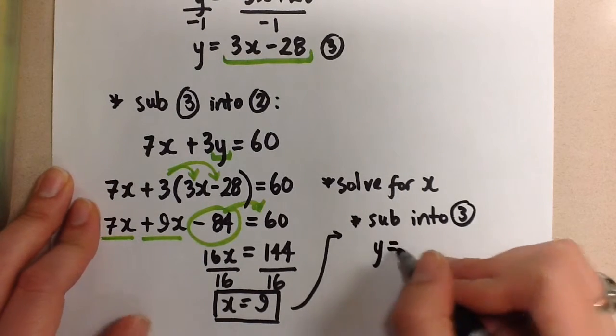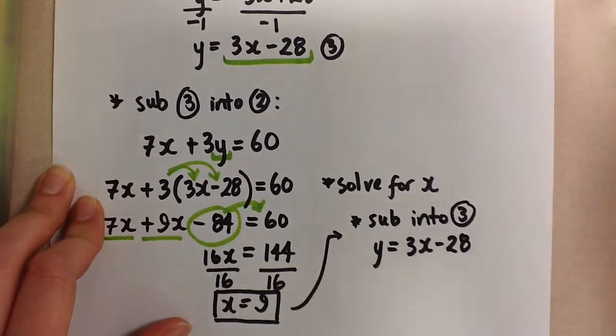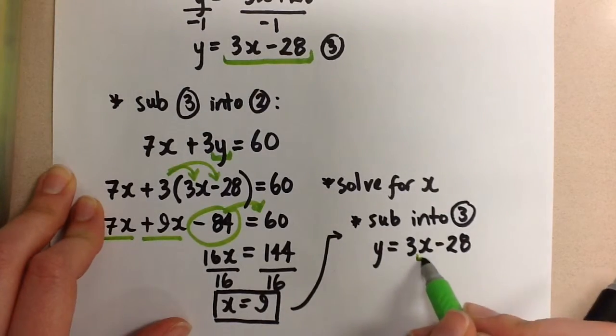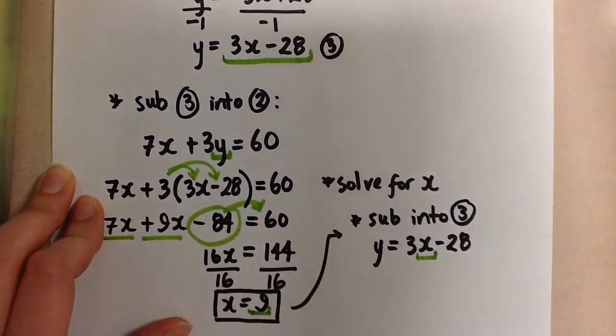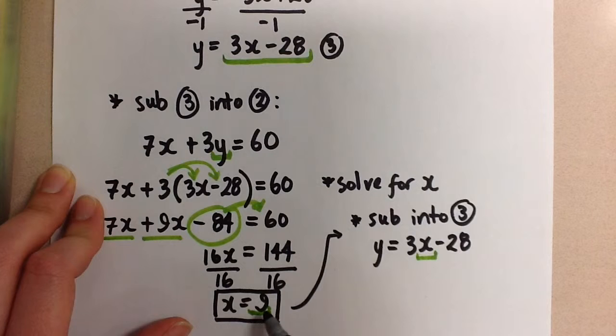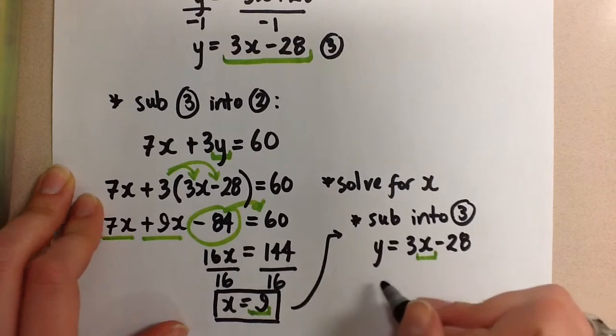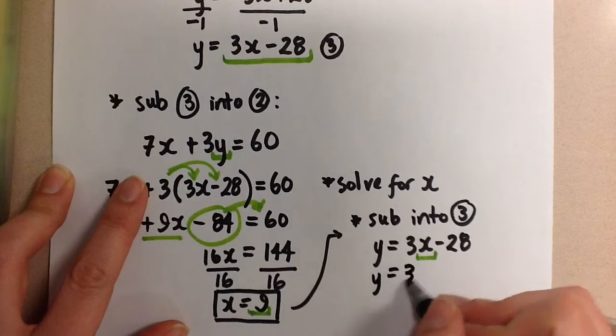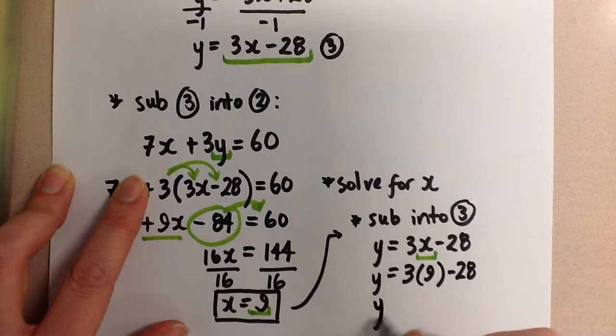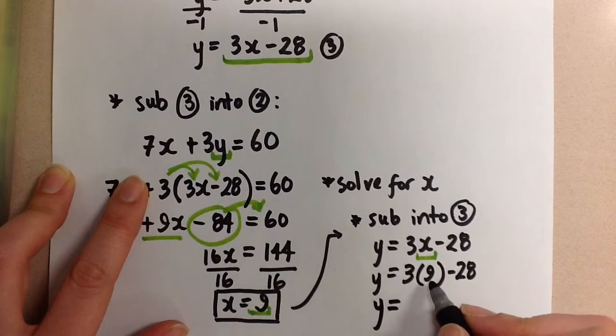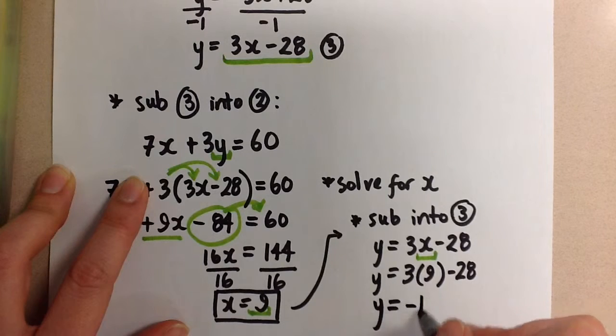So let's just move this up here, and we're going to sub into equation 3. And I get y equals, I had 3x minus 28. I'm going to sub in for x here, the value I found for x here. If x is equal to 9, I know that I can replace x with 9 in this equation. So we get 3 times 9 minus 28. And if you evaluate that, 3 times 9 is 27, minus 28 gives us negative 1.